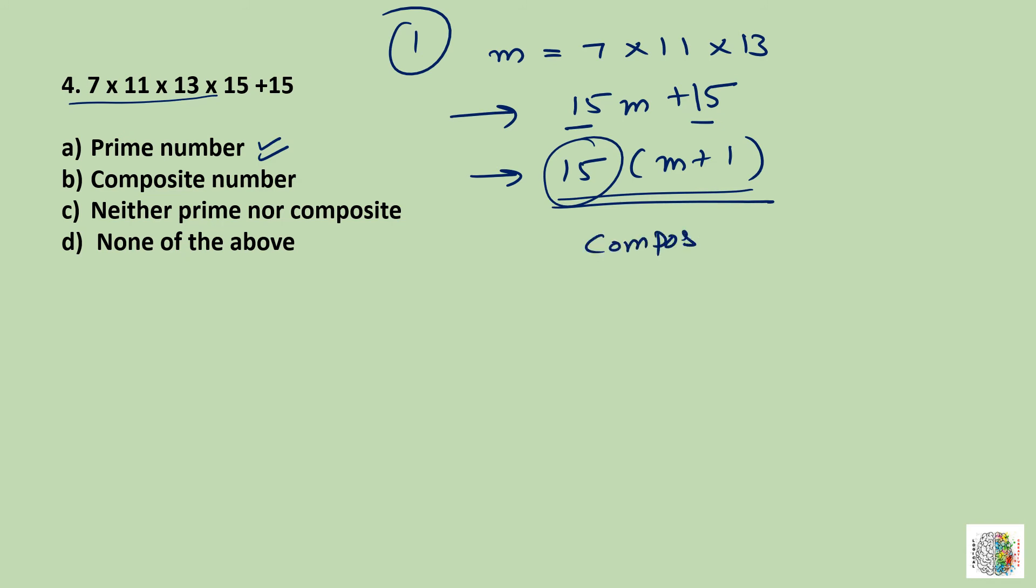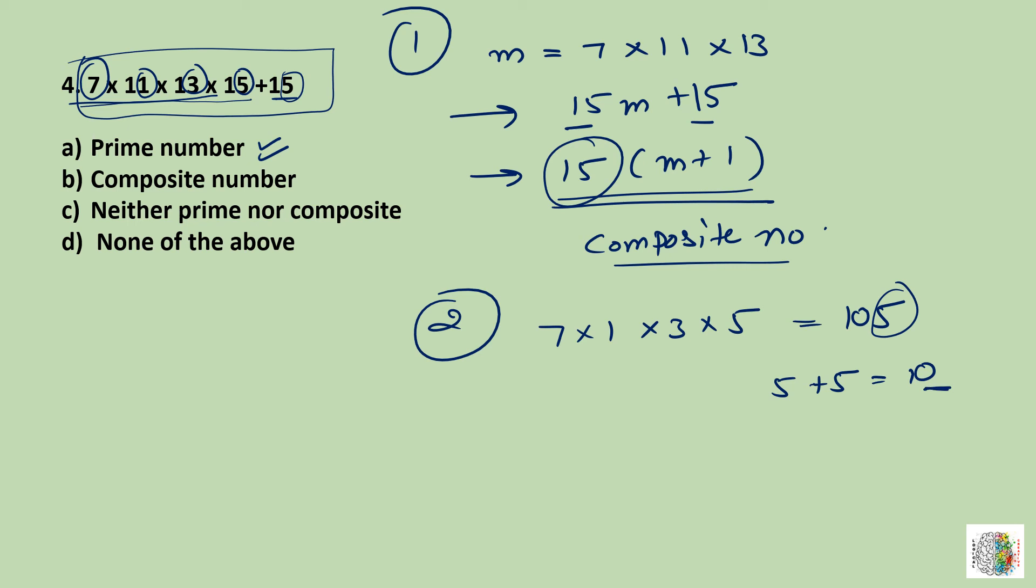Second trick: We multiply the unit places, like 7 into 1 into 3 into 5, which gives 105. The unit place of 15 is 5, so 5 plus 5 equals 10. This means if we solve the whole equation, the unit place will be zero. Any number with unit place zero is a composite number. So our answer is composite number, and option B is correct.